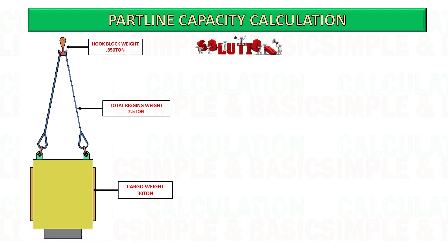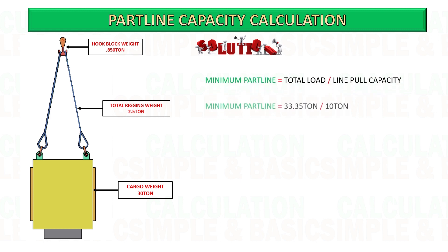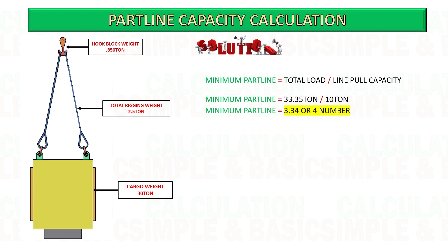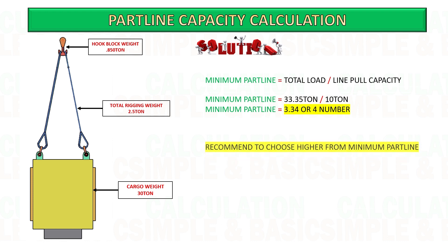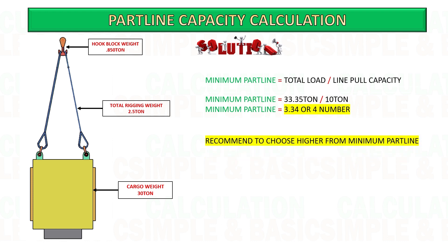Next, to get the minimum part lines required, divide the total load by the line pull capacity. You would round this up to 5 or 6 parts of line, depending on whether you want even or odd parts of line. For this example, I consider 5 part lines.